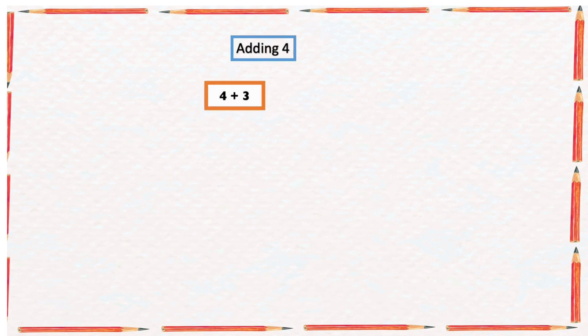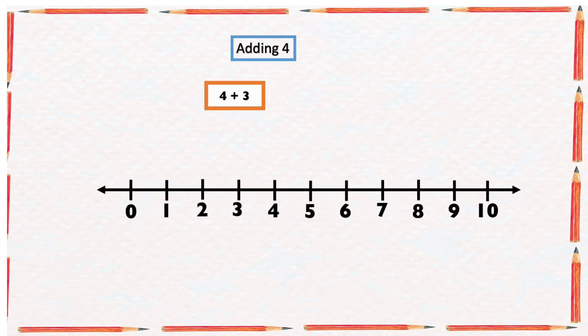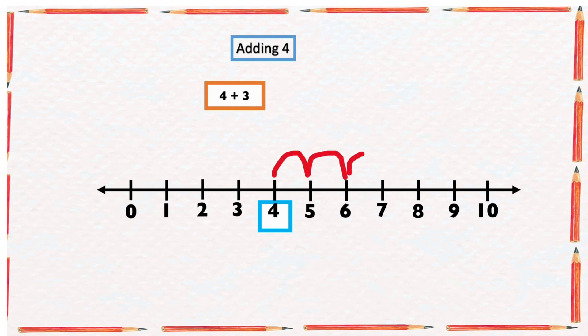Find the sum of four and three. On our number line, we're going to start from the bigger number, which is four, and count three numbers forward. We start from four and count: one, two, three. The arrow ended at seven, so the sum of four and three is seven.